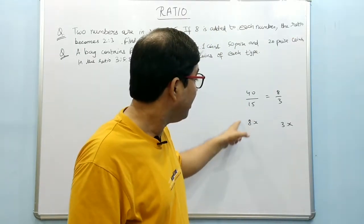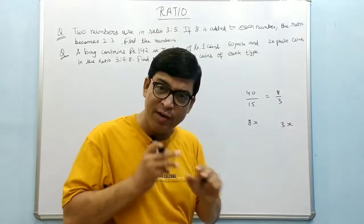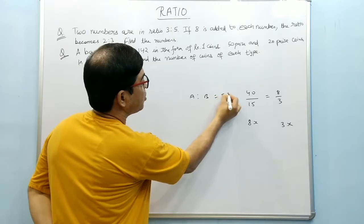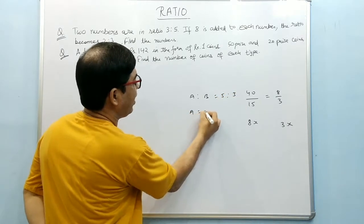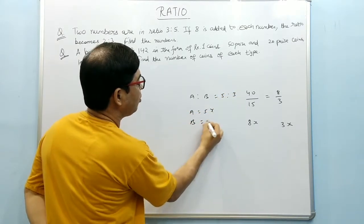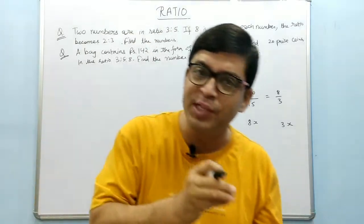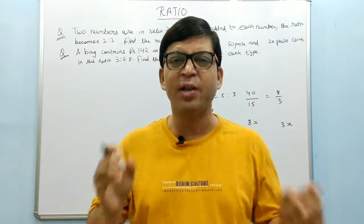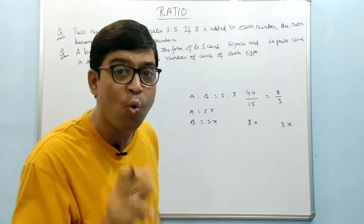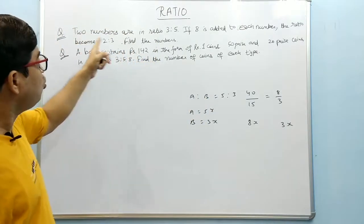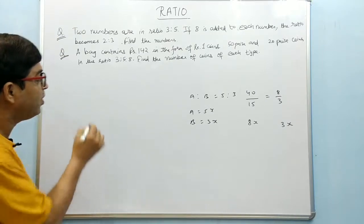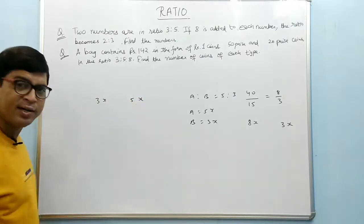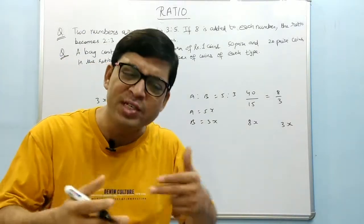Make a habit of taking ratio in terms of x. Wherever a ratio is given, say a is to b is 5 is to 3, that means a is equal to 5x and b is equal to 3x. You just start from this basic and your problems will be solved automatically. See here — two numbers are in ratio 3 is to 5, so the numbers will be 3x and 5x, just as I said.